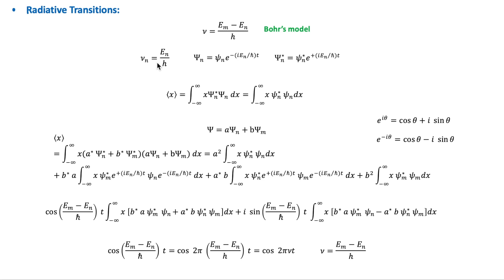Now consider an electron that shifts from one energy state to another. This happens, for example, when a system in its ground state N is excited through a beam of radiation or through a collision with another particle. It is then excited to another quantum state M, and the system emits radiation as it transitions from excited state EM back to ground state EN. During the time of transition, the electron can exist in both states N and M. A-conjugate times A is the probability of state N, B-conjugate times B is the probability of state M, and their sum equals one.